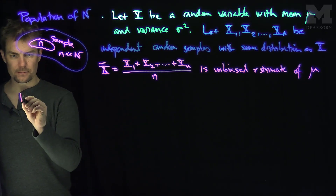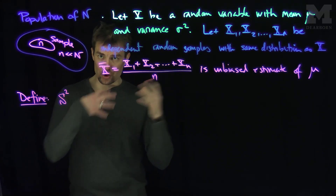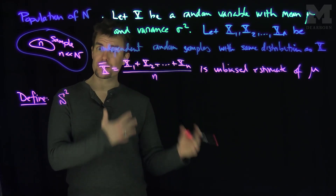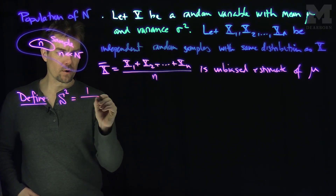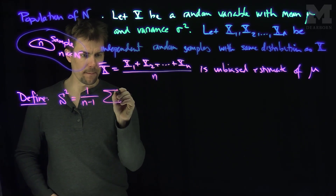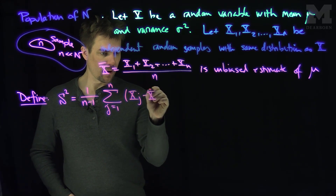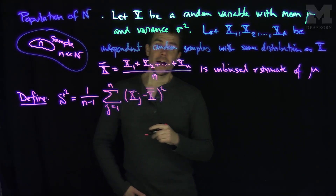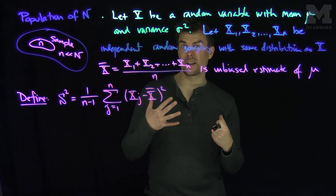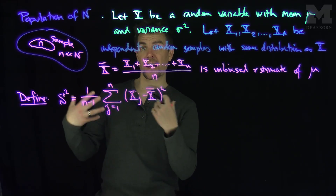I'm going to define capital S², a new random variable. It's a statistic — a function of x1, x2, ..., xn. It's defined as 1/(n−1) times the sum, j from 1 to n, of (xj − x-bar)². Note that little n must be bigger than 1 for this to make sense. I claim this is an estimate of σ², and I'd like to find its expected value to determine whether it is biased or unbiased.